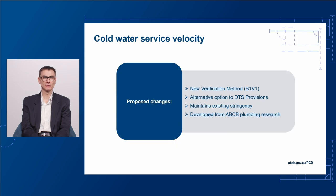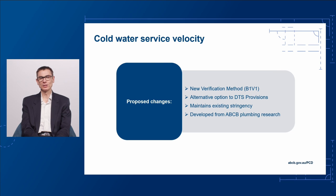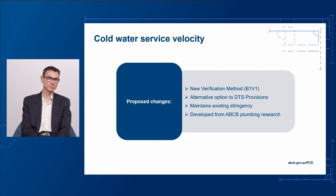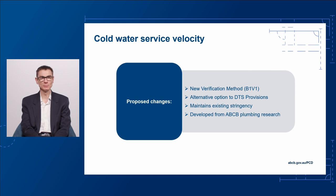The new verification method B1V1 has been developed from scratch. It's not replacing something currently in the code — it's providing an alternative method to demonstrate compliance with the requirements of B1P2, that three metres per second velocity requirement. B1V1 is a series of formulas that determines the minimum pipe size necessary to meet that requirement, taking into account the fixture units upstream and the probability of those fixture units being used. We invite your feedback on this verification method, which was developed with a TRG as an outcome from the ABCB Plumbing Research Project.